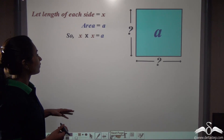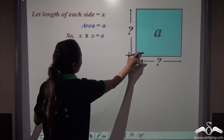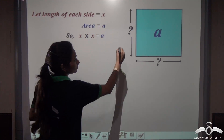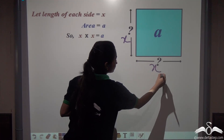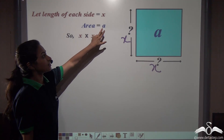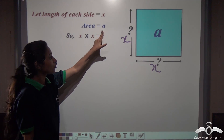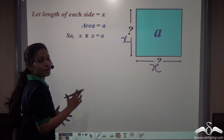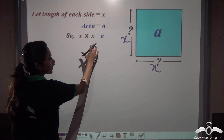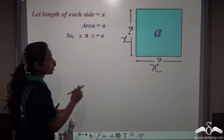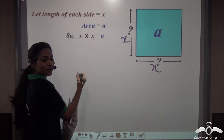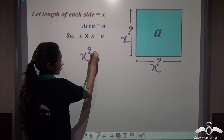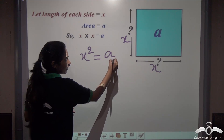Now we know that if we have a square with length x, and the area is given in square units, the area equals side into side. So x into x, which we write as x squared, gives me the area.